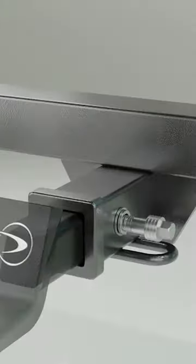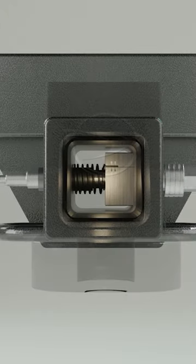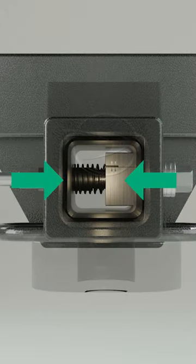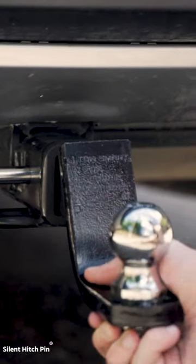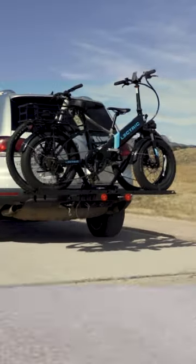Silent Hitchpin works by compressing the vehicle hitch wall to any hollow shank tow accessory device inside the hitch receiver. This compression removes noise and movement inside your hitch going down the road.